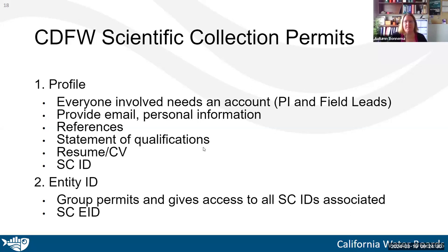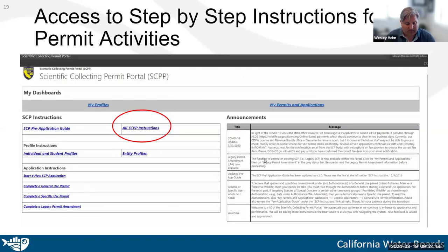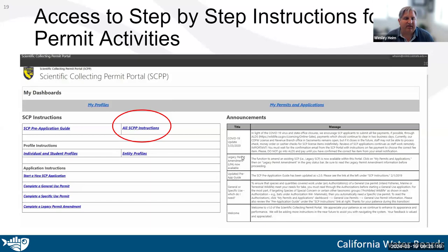One thing we learned: you want to provide an email that you'll have access to for a while, because you can't update your profile — you have to start a new one if you need to change that email or personal information. This is a screenshot of my dashboard within the California Fish and Wildlife site. Once you apply, get your user information, and log in, you'll get to this screen. You'll see a circle with all instructions — there are really helpful step-by-step guides.